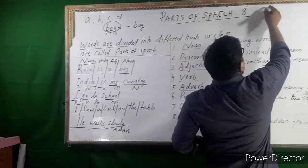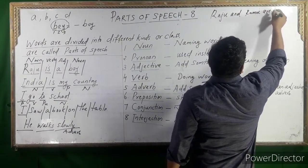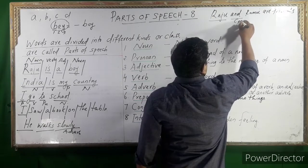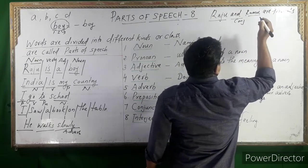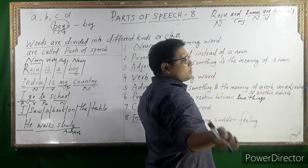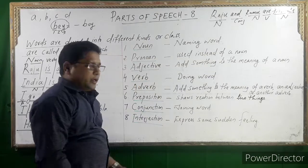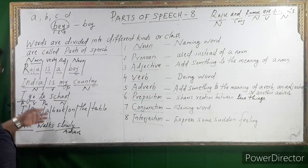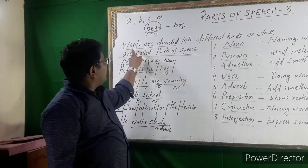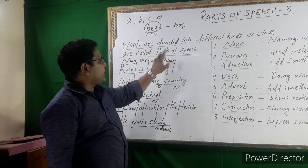'Raju and Ram are friends.' Raju is the subject — a noun. 'And' is a conjunction. Ramu is also a noun. 'Are' is a verb — an auxiliary verb. 'Friends' is a noun. In this way it is very simple to understand how we divide words into classes. Words are divided into different kinds or class — these are called parts of speech.